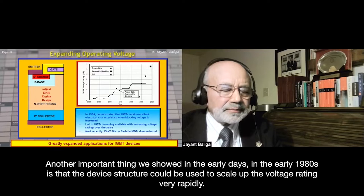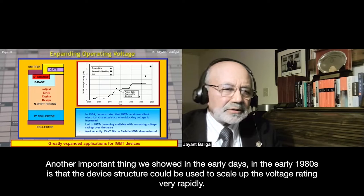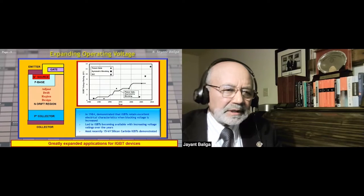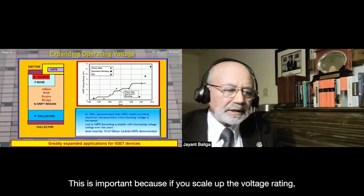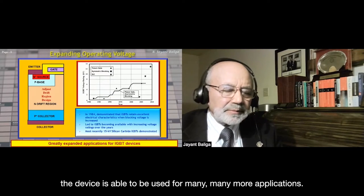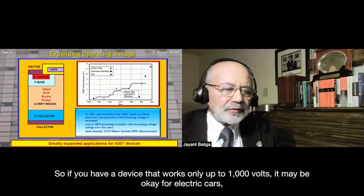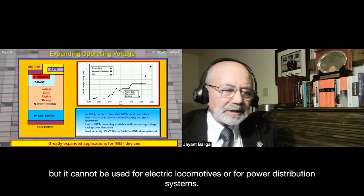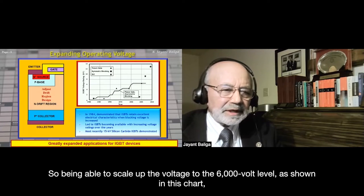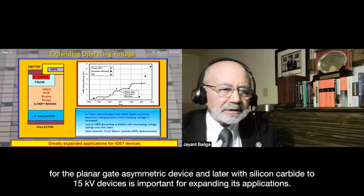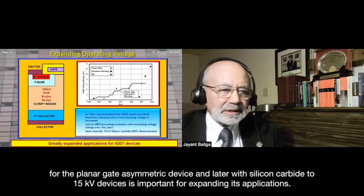Another important early demonstration was that the device structure could be scaled up in voltage rating very rapidly. This is important because scaling up voltage allows the device to be used in many more applications. A device working only up to 1,000 volts may be okay for electric cars but cannot be used for electric locomotives or power distribution. Being able to scale up to the 6,000-volt level for the planar gate asymmetric device, and later to 15 kV devices with silicon carbide, is important for expanding applications.